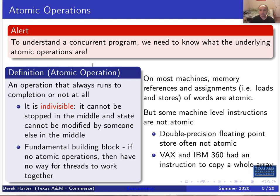To understand a concurrent program you need to understand what the underlying atomic operations are. An atomic operation is one that always runs to completion or not at all — it's indivisible, the fundamental building block. When I talk about concurrent processes or concurrent threads, that means they're running at the same time on the same system, maybe trying to access the same resources or the same critical code at the same time. Atomic operations are critical — only one thing can do an atomic operation at a time.